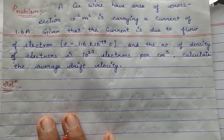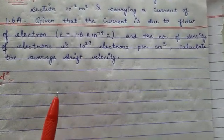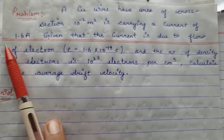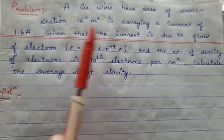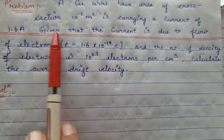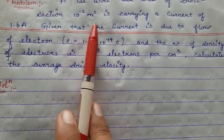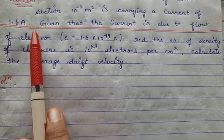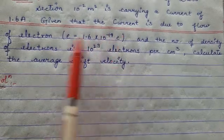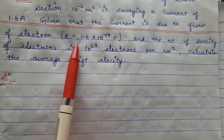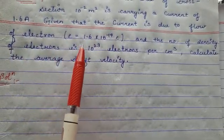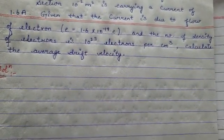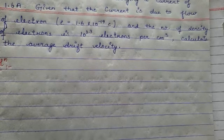Good afternoon everyone. Today we are going to solve the problem of average drift velocity. Have a look at the statement: a copper wire has an area of cross-section 10 raised to power minus 2 meter square, carrying a current of 1.6 ampere. The current is due to the flow of electrons and the number density of electrons is 10 raised to power 23 electrons per centimeter cube. Calculate the average drift velocity.